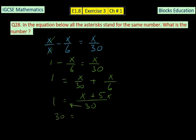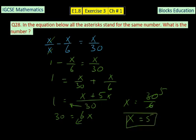So it will be 5X. 1 multiplied by 30 on that side, so 30 equals X plus 5X, which is 6X. So it means X equals 30 over 6. 6 goes to 30, so X equals 5. The value of the asterisk is 5.